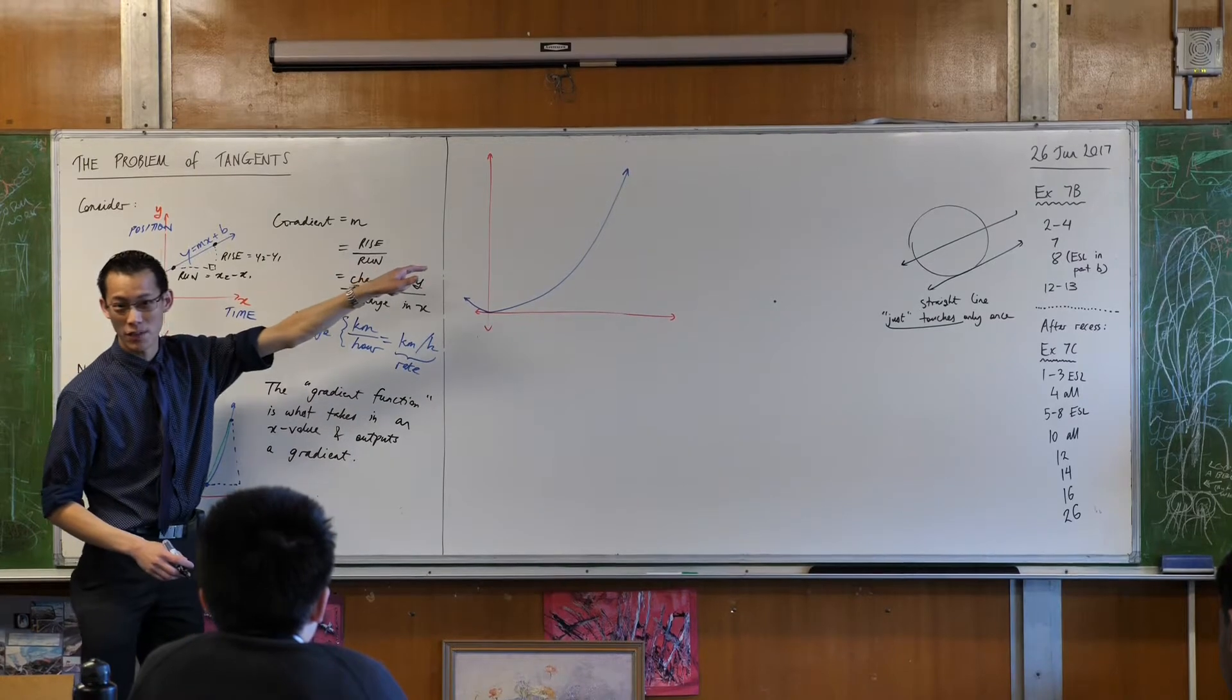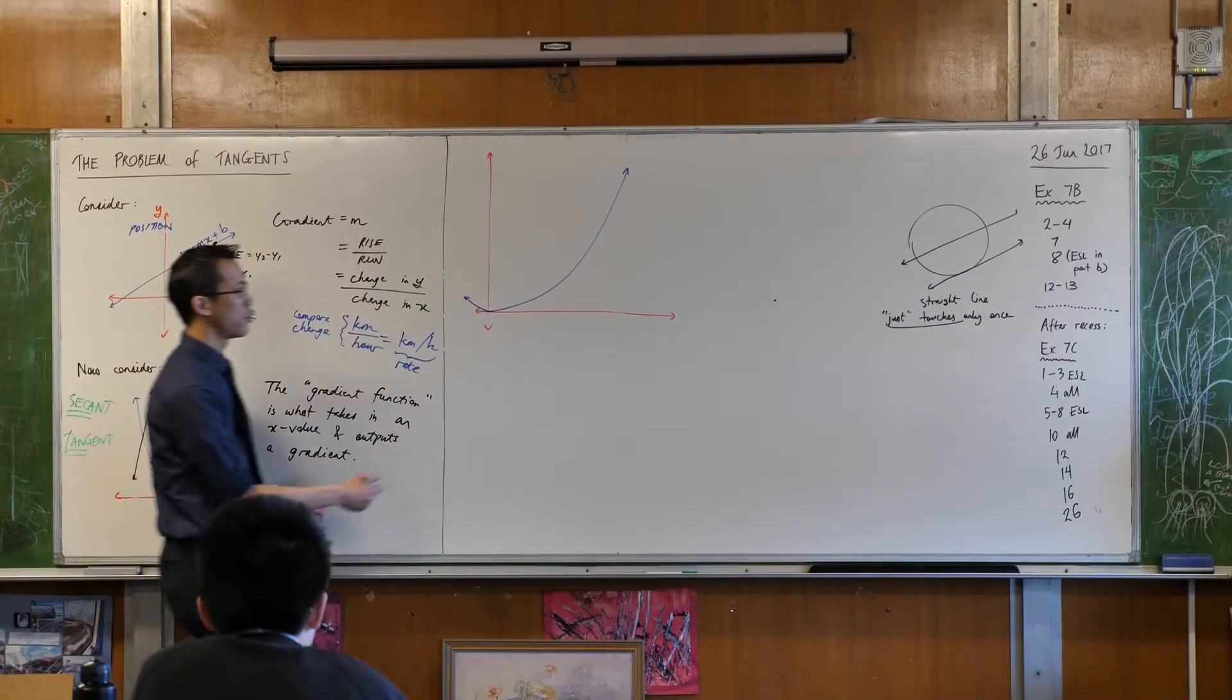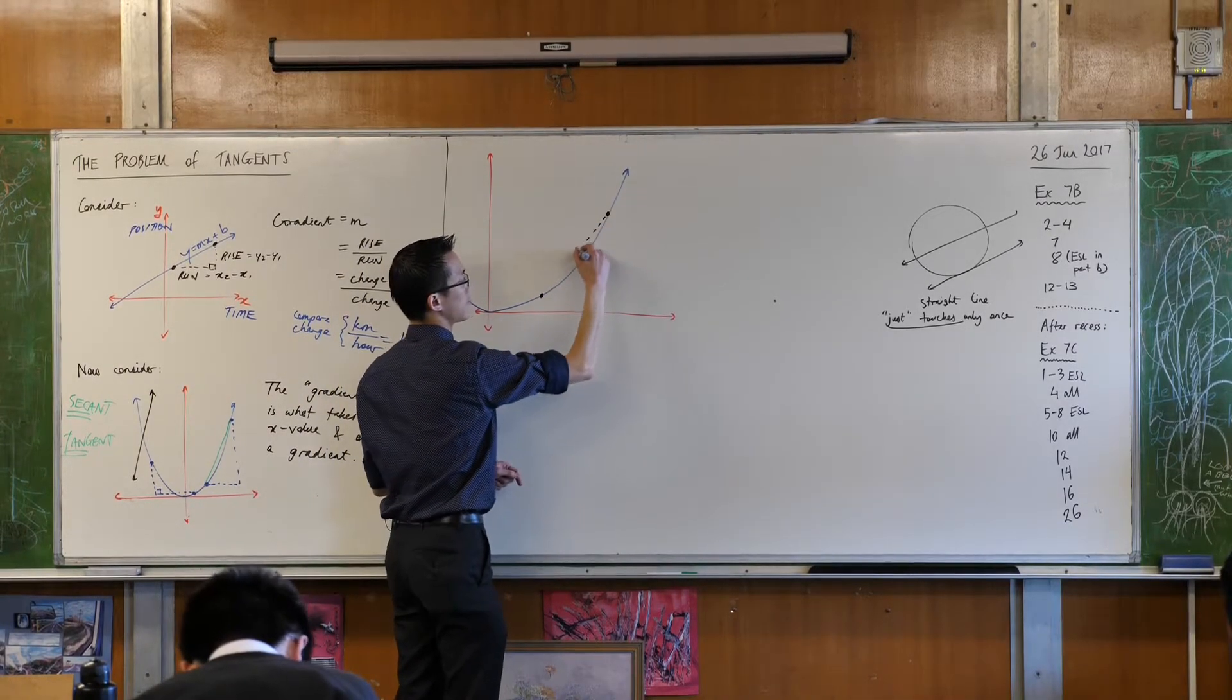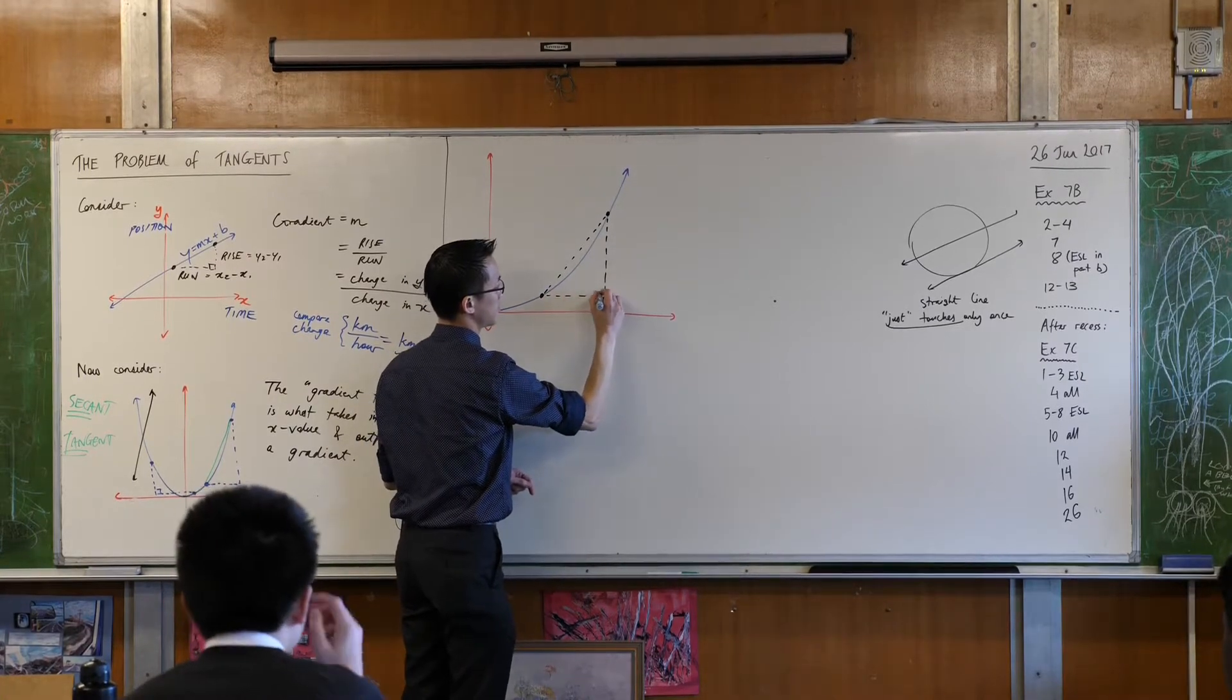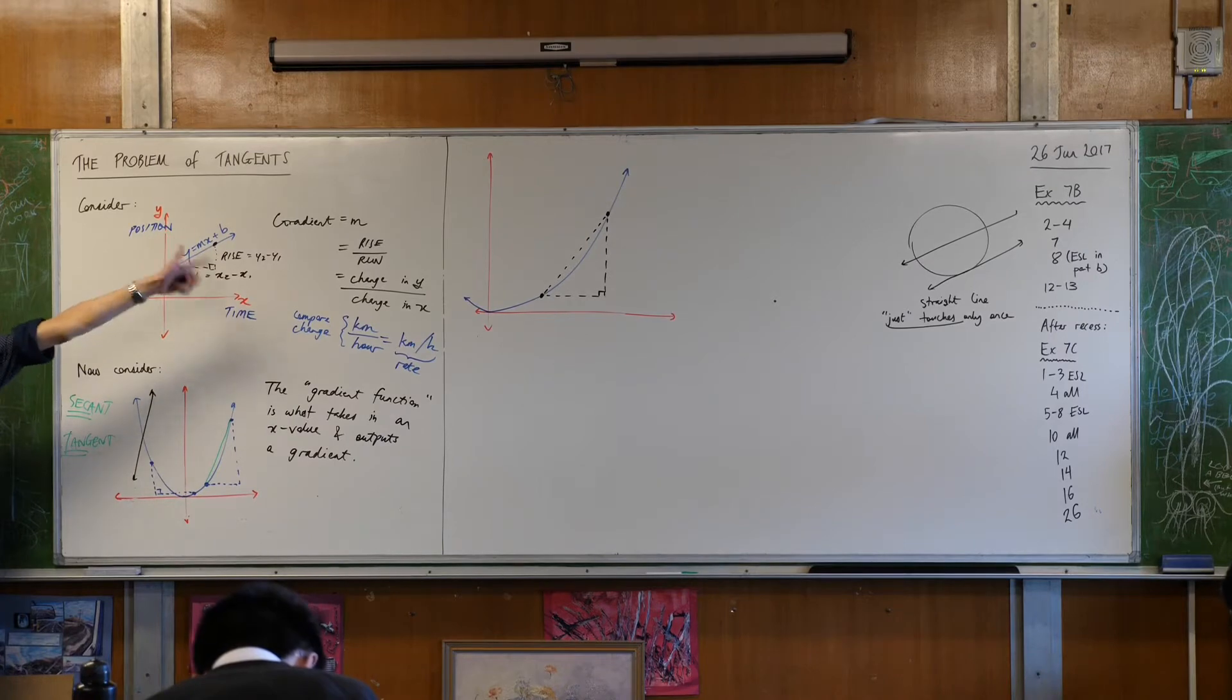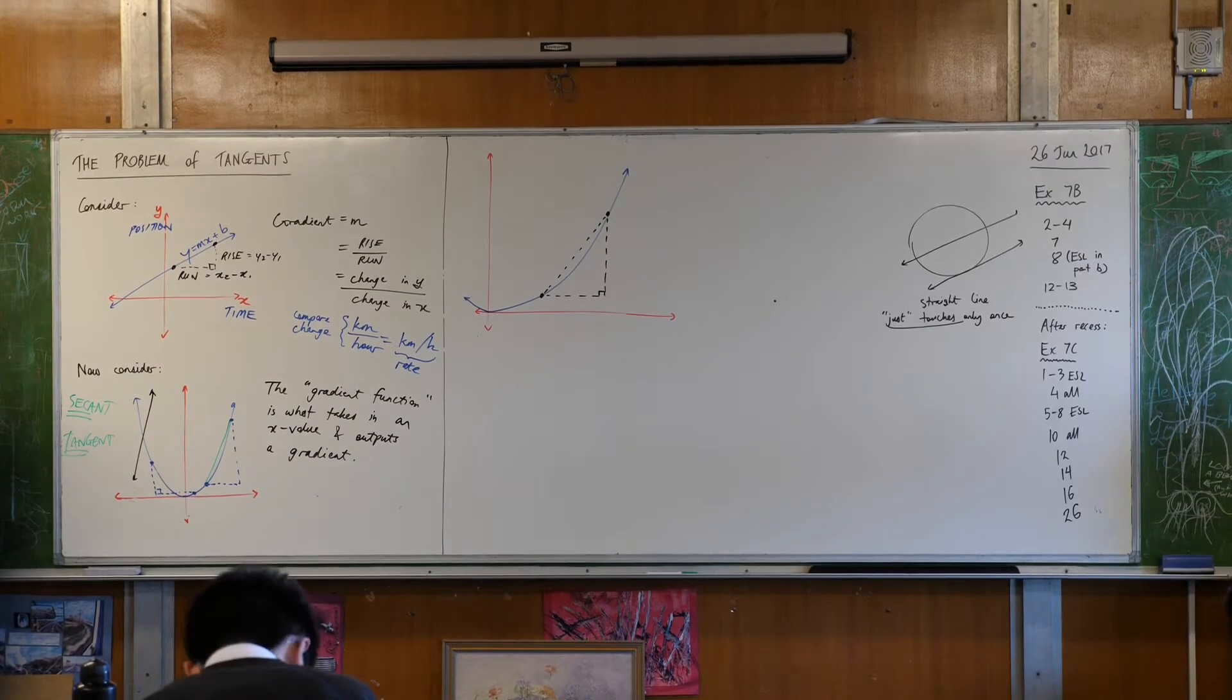So on our big diagram over here, let's again experiment with something like this, put a couple of points on here, like so. I've got two points, I've got a secant right now.